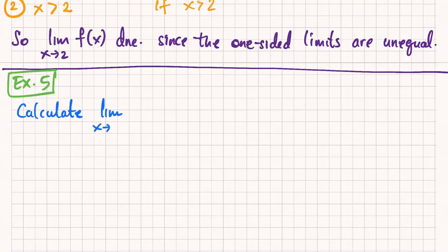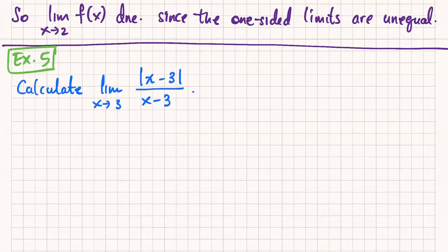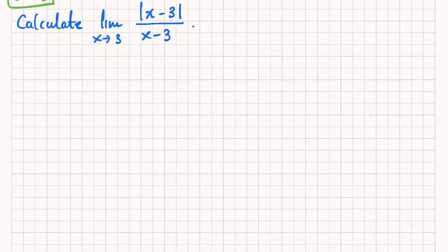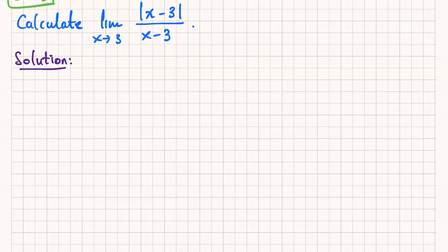Calculate the limit as x approaches 3 of absolute value of x minus 3 over x minus 3. I'm going to give you two minutes to do this problem. I don't necessarily think you're going to solve it, but in these two to two and a half minutes, try to discover what is weird about this limit, or what strategy you might use to calculate it. You can use a graphing calculator, a table of values, or try to figure out some intuition about what's happening.